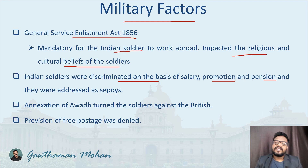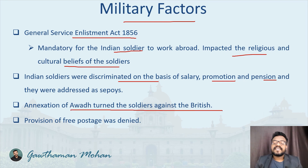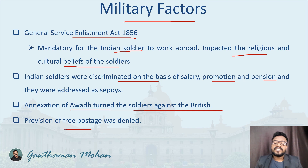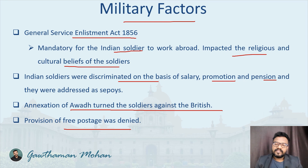The term 'Sepoy Mutiny' was given by the Britishers. The annexation of Awad also turned the soldiers against the Britishers — the soldiers were highly unsatisfied and became aggressive. Additionally, the provision of free postage, which had previously been available, was denied to Indian soldiers, making them more furious, aggressive, and rebellious in nature. These are the important military factors that led to the 1857 revolt.